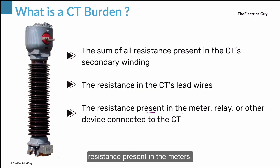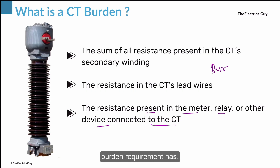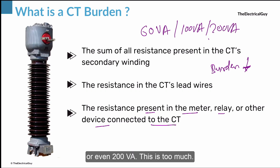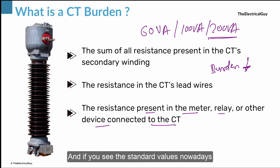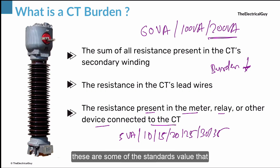The third important parameter is the resistance present in the meters, relays, or other devices connected to the CT. Since we are now in the digital era, all meters and relays have gone digital and the burden requirement has significantly dropped compared to 20–30 years ago when everything was manual and requirements were very high — we have seen CTs rated at 60 VA, 100 VA, or even 200 VA. In today's digital era the burden requirement has significantly reduced. Standard values you will see on the nameplate nowadays are 5, 10, 15, 20, 25, 30, and 35 VA.